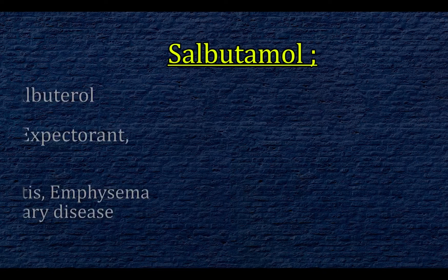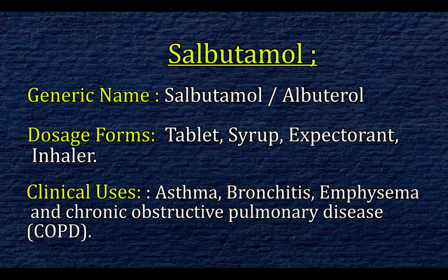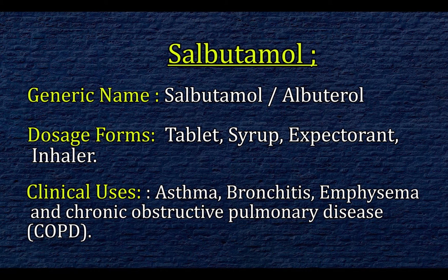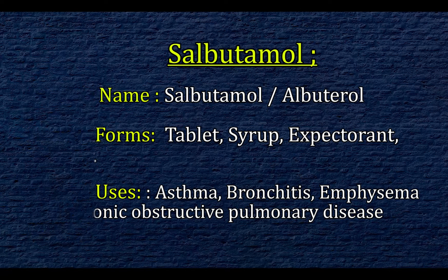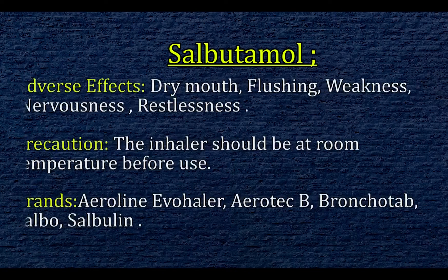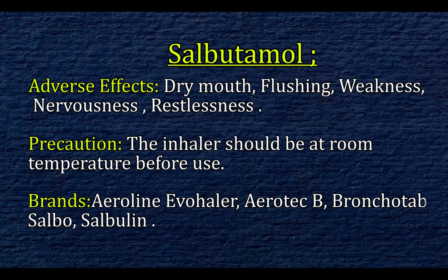Salbutamol. Generic name: Salbutamol (Albuterol). Dosage forms: tablet, syrup, expectorant, inhaler. Clinical uses: asthma, bronchitis, emphysema, and chronic obstructive pulmonary disease. Adverse effects: dry mouth, flushing, weakness, nervousness, and restlessness.